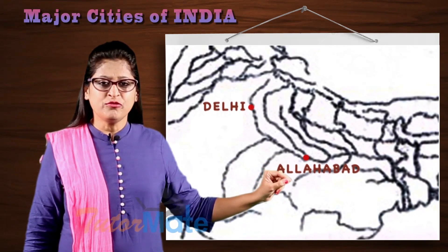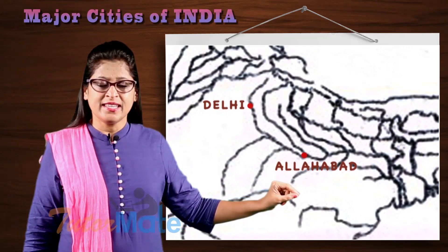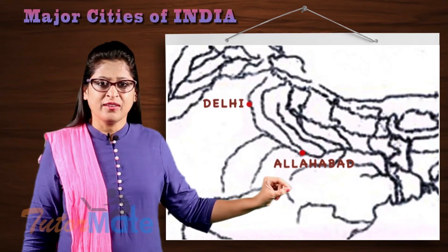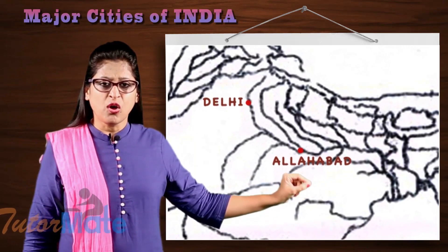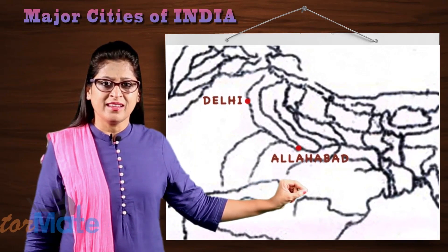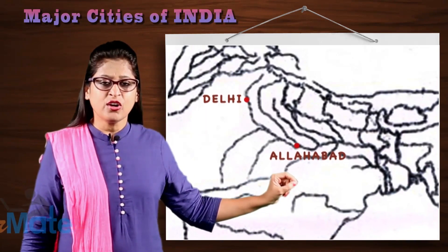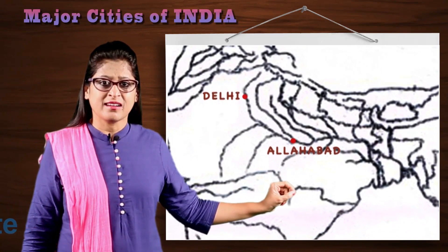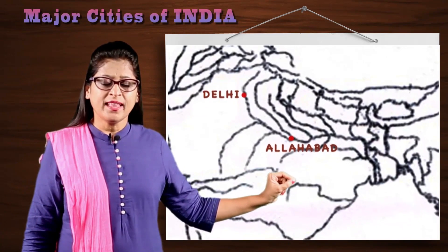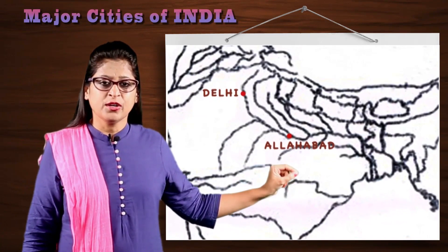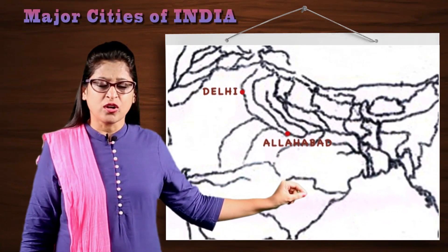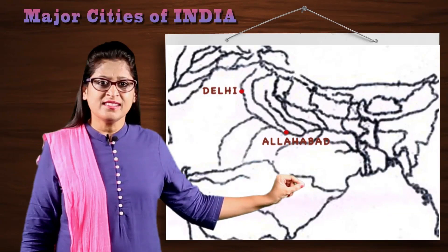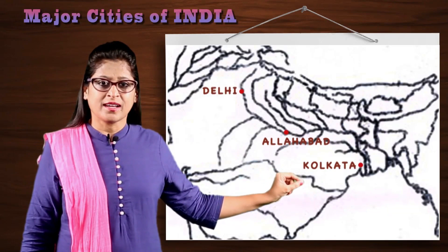Then when you move towards the east, you can see a small little V near your Ganga-Brahmaputra Delta. On that V, you mark a dot — that is Kolkata.